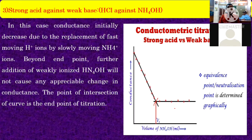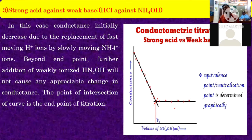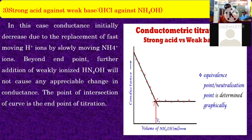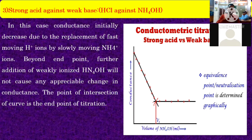Therefore, since NH₄OH is weakly ionized, a sharp line occurs — it is the equivalent reading on the conductivity meter. This is the type of strong acid against weak base: HCl against NH₄OH. The point of intersection of the curve is the endpoint of titration. If multiple equilibrium readings occur, you take any one reading at equilibrium — this is the equivalence point of conductometric titration for strong acid versus weak base.